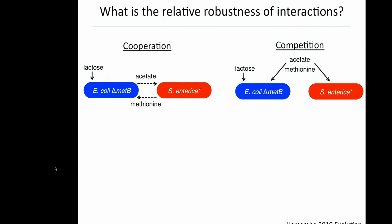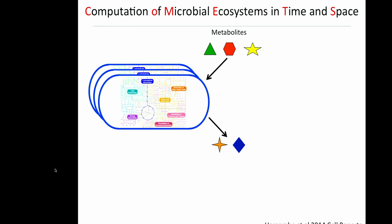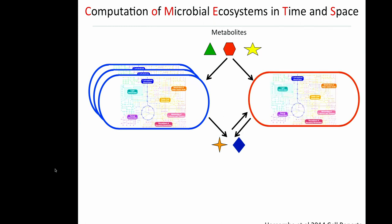We made use of the computational platform called COMETS — Computation of Microbial Ecosystems in Time and Space — that Daniel stepped through yesterday. As a brief review: you start with a genome-scale metabolic model of one of your species and some defined metabolic environment. You then run flux balance analysis to predict which metabolites will be utilized by the species, how much that species will grow, and what byproducts that species will excrete into its environment. You can then throw multiple models into a single simulation, and species interactions emerge as a result of the utilization and exchange of metabolites.